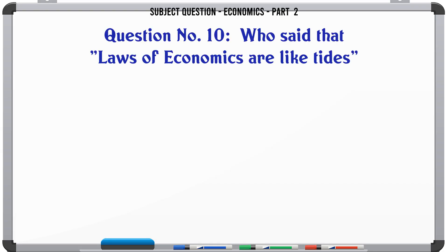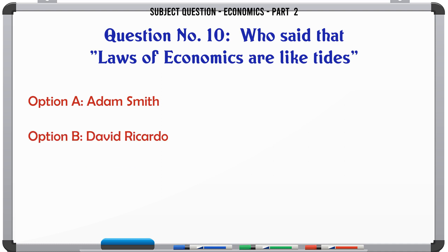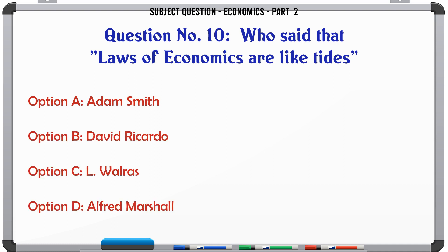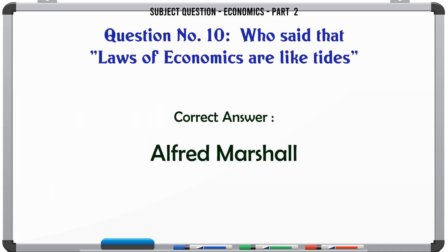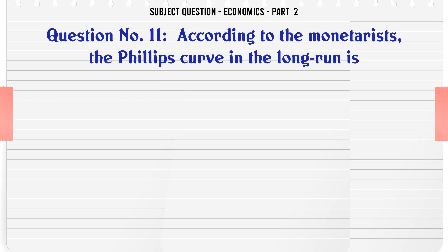Who said that laws of economics are like tides? A. Adam Smith. B. David Ricardo. C. L. Walras. D. Alfred Marshall. The correct answer is: Alfred Marshall.